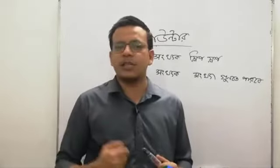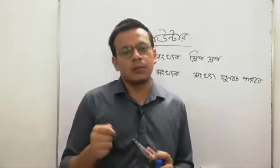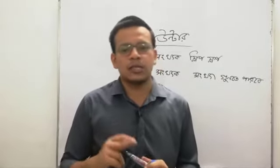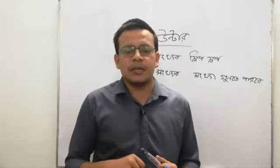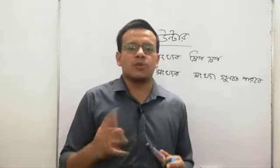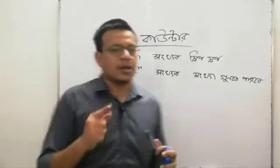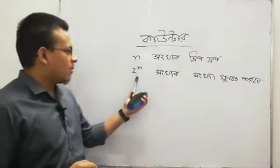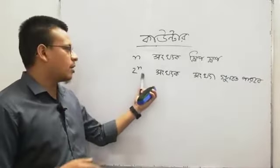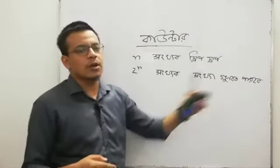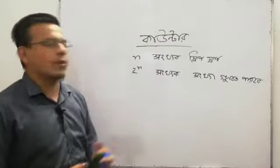If we have three flip-flops, then it will be 2 to the power N — meaning 2 to the power 3, which means eight. So eight states can be counted. If we have four flip-flops, then we can count 2 to the power 4 states. So N flip-flops give us 2 to the power N states to count.